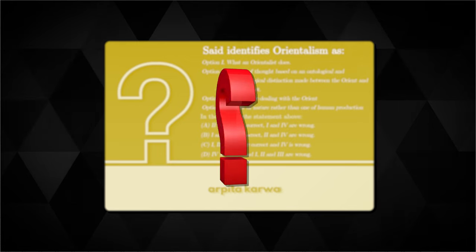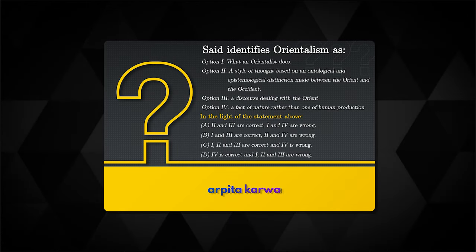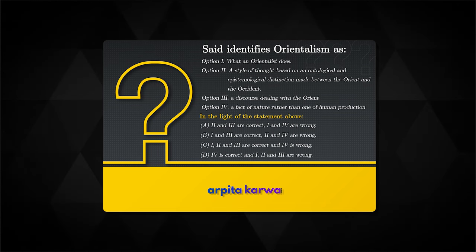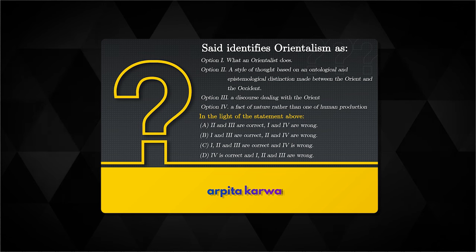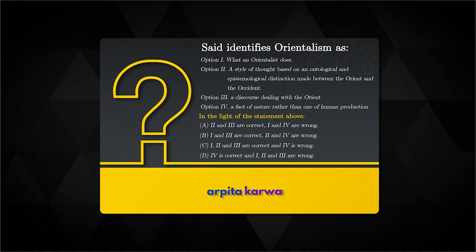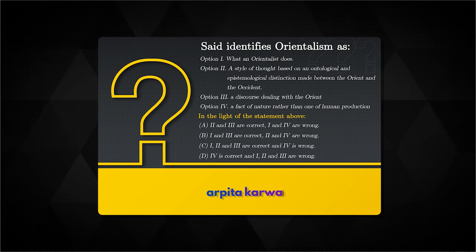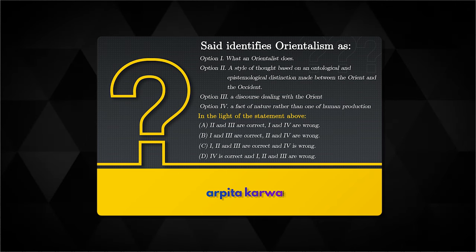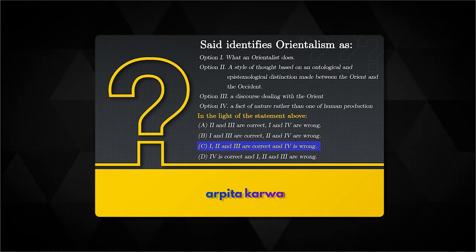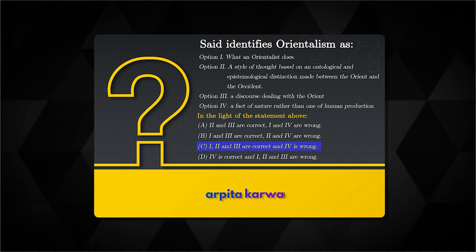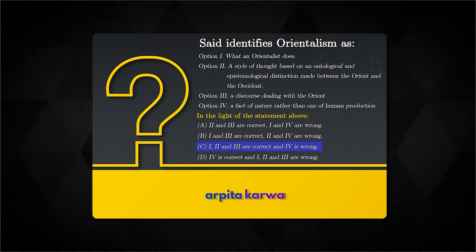Now let's quickly answer a question on Orientalism from a previous UGCnet exam. You have four options, and based on those options you need to find out which are correct and which are wrong. Now that you've learned the basics of Orientalism, you can easily see that the correct option is answer C — options 1, 2 and 3 are all correct; the fourth one is wrong. Orientalism is what an Orientalist does; it is a style of thought based on an ontological and epistemological distinction made between the Orient and the Occident; and it is a discourse dealing with the Orient.